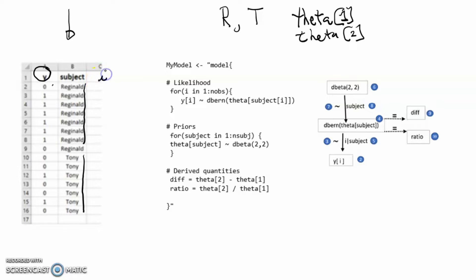Implicitly, we can think of I as being the row number. Eventually we're going to modify our data, so that subject is no longer a character, it's no longer going to be a person's name, it's going to be a factor, and therefore it's going to be stored as a number. When we've done that, Reginald's going to turn out to be a 1, and Tony is going to turn out to be a 2.